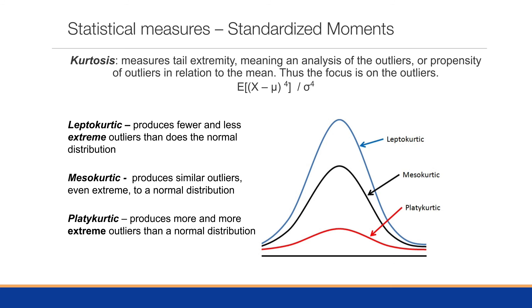Another statistical measure is the fourth moment, which is the kurtosis, which measures the tail extremity, which is really an analysis of the outliers or propensity of outliers in relation to the mean. This is the focus on outliers. Thus, the focus is on the outliers.